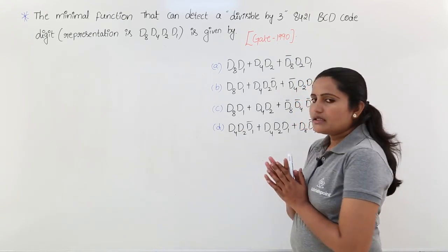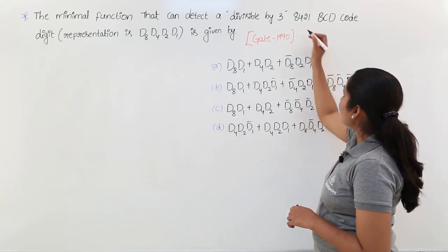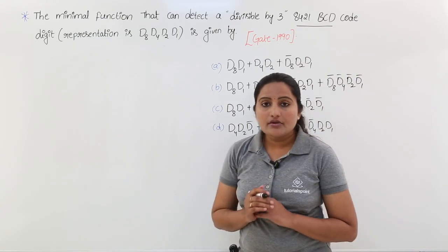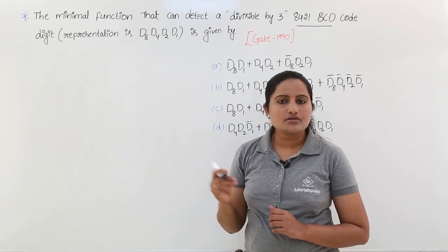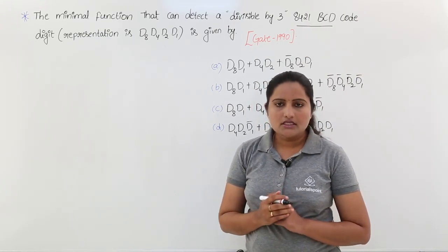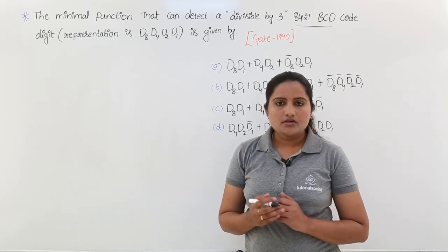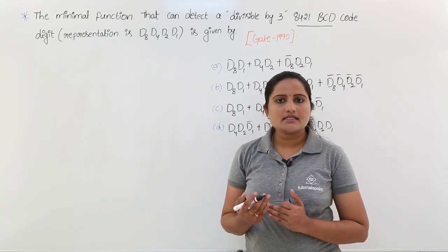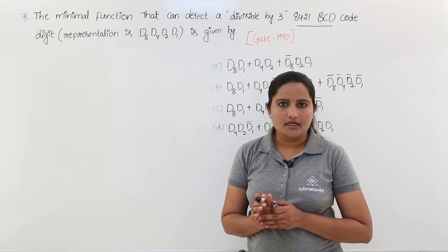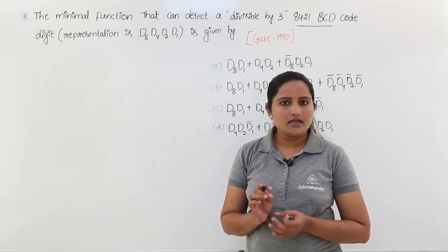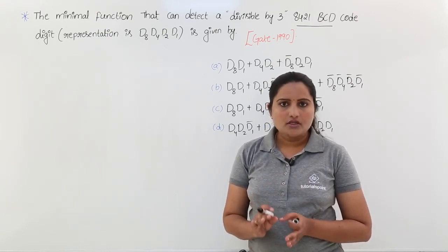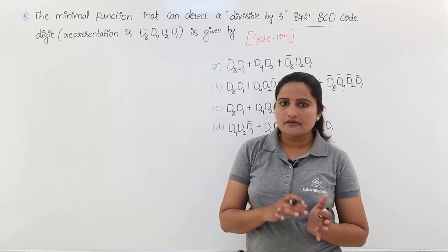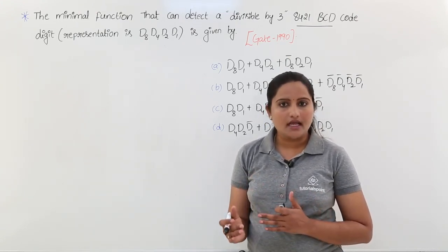This is a very important point: 8421 BCD gives you a lot of information to solve this problem. If you know BCD, 8421 BCD covers only up to 9, because 8421 is a 4-bit code. A 4-bit BCD code starts from 0 and ends with 9.